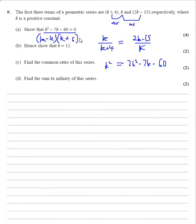So there's two possible answers to what k could be, k equals 12 and k equals minus 5, but here we're told k is a positive constant, so k must be 12 is the next line I'd write.